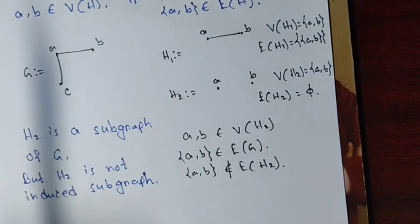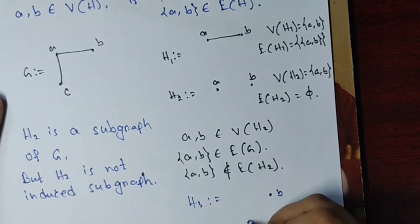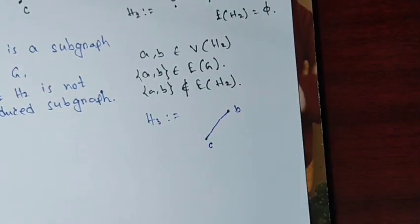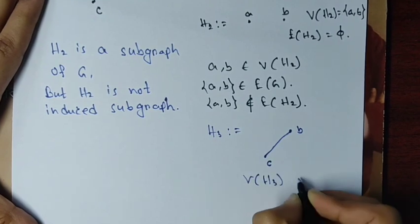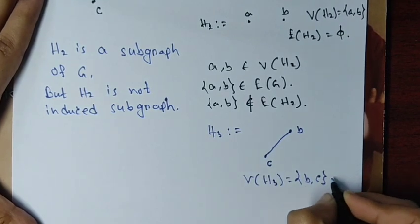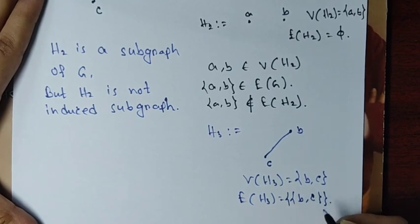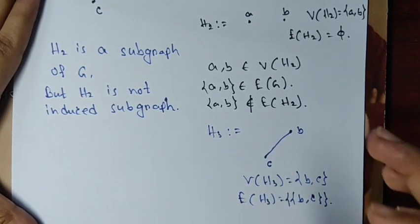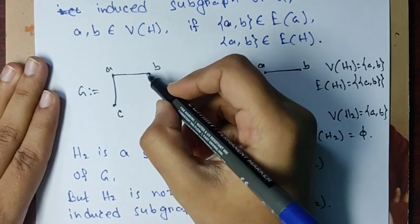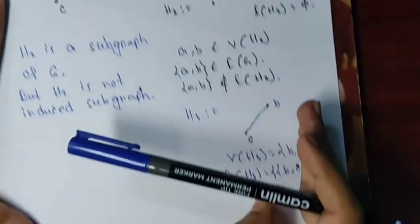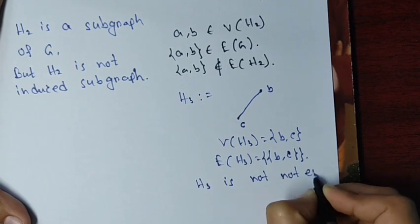Now take H3 with vertices B and C and edge set {BC}. Is this an induced subgraph? Actually it is not even a subgraph, because the edge BC is not in graph G. So H3 is not even a subgraph of G.